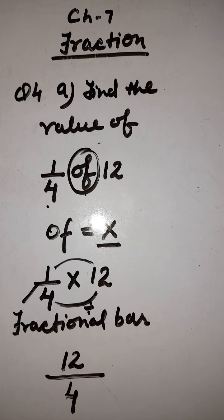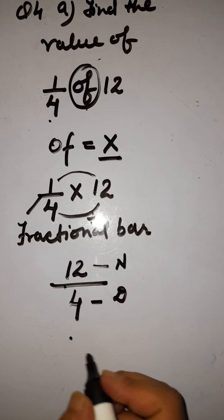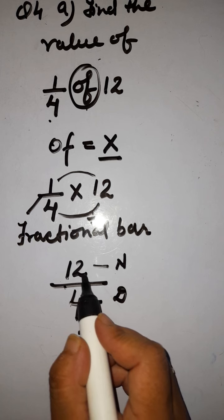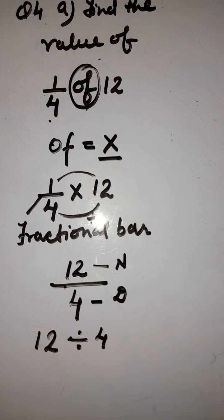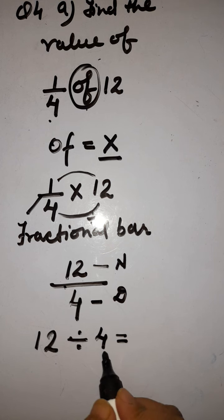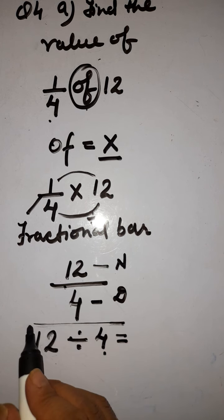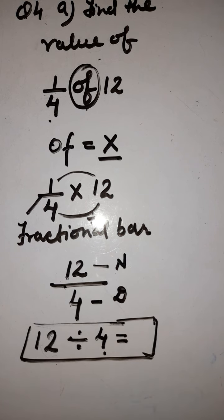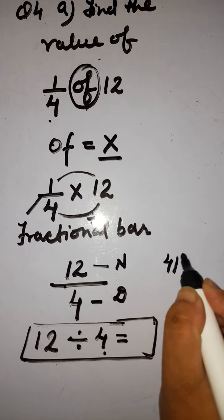This is numerator, this is denominator. जब हमारा ये fractional bar division symbol में convert होता है, तो जो हमारा numerator होता है वो left side आता है, और जो आपका denominator होता है वो right side चला जाता है. Now you have to recite the table of 4. आपको 4 का table read करना है. ऐसे वाले questions आप directly solve करते हो — division column बना के solve करने की जरुरत नहीं है, just recite the table of the particular number.